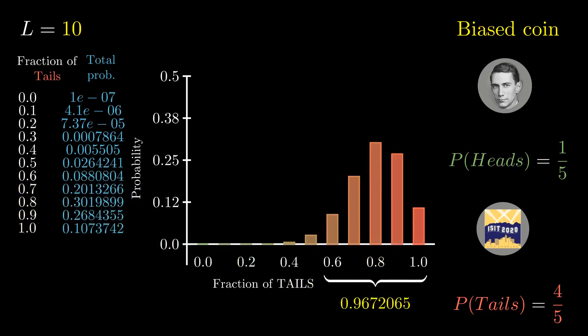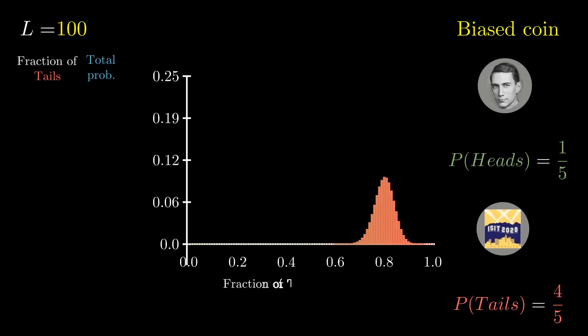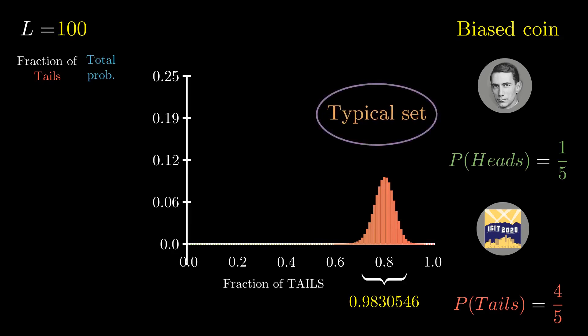Let us keep going all the way to 100 tosses. Now observe that the probabilities concentrate more around 0.8. That is, the sum of probabilities of sequences having approximately four-fifths fraction of tails is getting closer to 1. This means that the chance of getting a fraction of tails far away from the actual probability of tails is going down to zero as we keep tossing. With a larger number of tosses, we typically see sequences that have around 0.8 fraction of tails, which is the probability of the coin turning up tails.